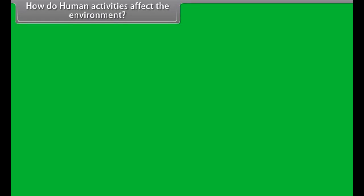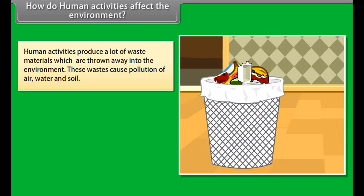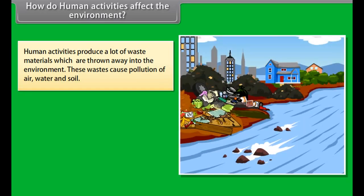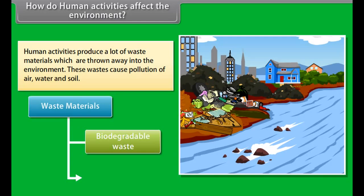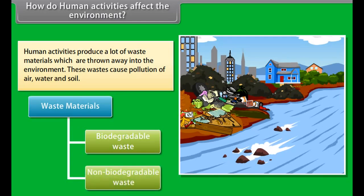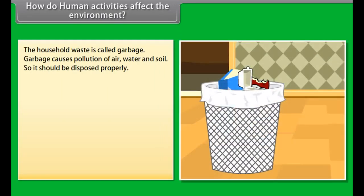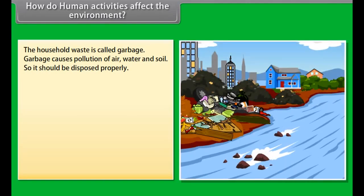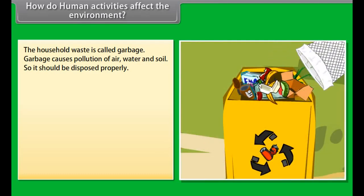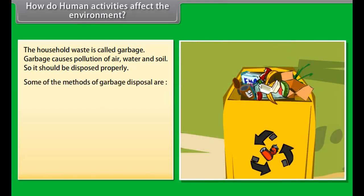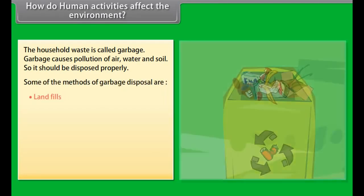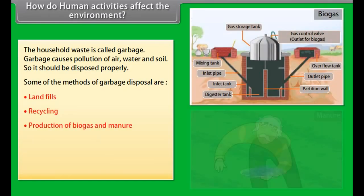Biomagnification. Harmful chemicals like insecticides and pesticides, which are used to protect crops from insects and pests, are absorbed by plants and enter the food chain. Since these chemicals are non-biodegradable, they get accumulated at every trophic level and their concentration increases. Since human beings occupy the highest trophic level, the concentration of these harmful chemicals is maximum in our bodies. The increase in concentration of harmful chemicals in the bodies of organisms at higher trophic levels is called biological magnification.